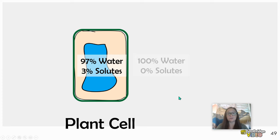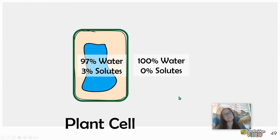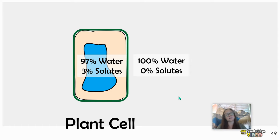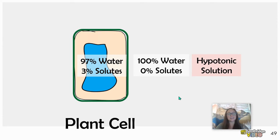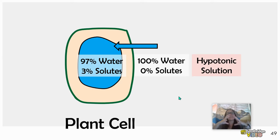Now let's see what happens if the cell is placed in 100% water. You want to identify where there's a higher concentration of water and a lower concentration of water. This cell is placed in a hypotonic solution with more water on the outside, and so the water is going to flow in, which causes the cell to gain mass and to swell.